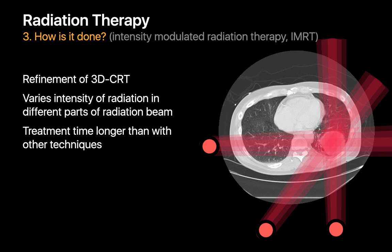IMRT, or Intensity Modulated Radiation Therapy, uses multiple x-ray beams with different intensities to deliver the highest dose to the tumor while potentially exposing surrounding healthy tissue to less radiation than SBRT. IMRT often involves a longer course of treatment since radiation delivery is more complex. It also requires specialized equipment and personnel and is generally more expensive than SBRT.